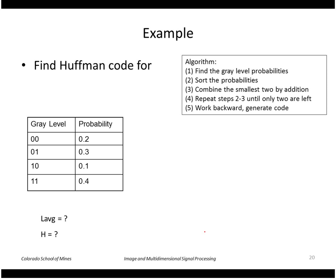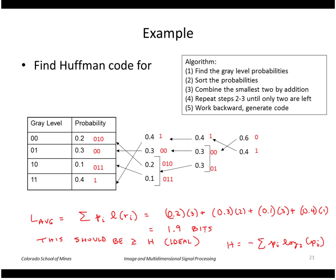Here's another simple example with only four gray levels. I won't go through it but just show the answer. Here is the code that you would generate and the average length of that code is 1.9 bits, and again you can calculate if that's greater than the entropy using this formula.